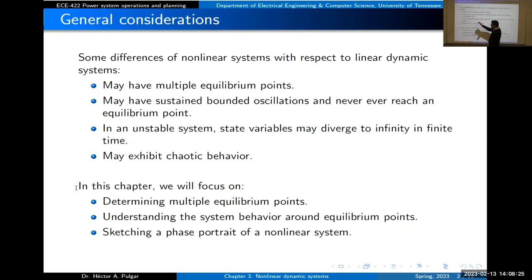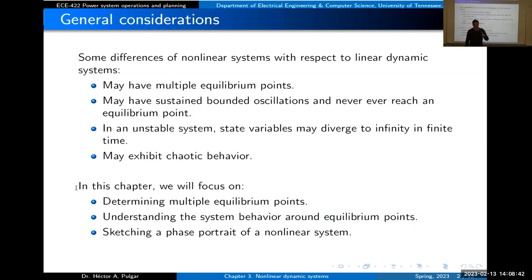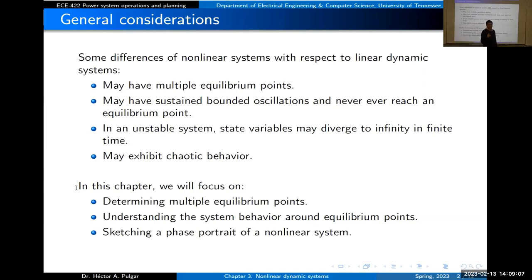Some differences between linear and nonlinear systems: the first one we'll review in this chapter is potentially multiple equilibrium points. In a linear system with no excitation — x-dot equals A times x — the equilibrium point is zero. All state variables x1 through xn are zero and there is just one equilibrium point. In a nonlinear system we might have more than one — how many depends on the system.